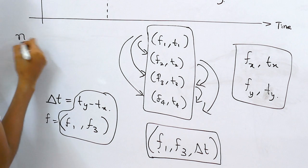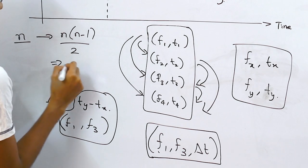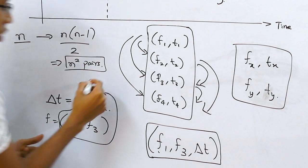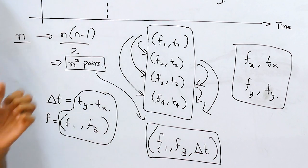So if you have n points, you're going to have n into n minus one by two pairs, which is something like n squared pairs in this song, which are each going to have their own first frequency, second frequency, and the delta of the time between those two given points.